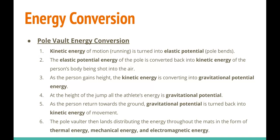At the maximum height of the jump, all of the energy has been converted into gravitational potential energy. As the person then starts falling back down toward the mat, all that gravitational potential energy is now turning back into kinetic energy. Once they hit the mat, the pole vaulter lands distributing energy throughout the mat in the form of thermal energy, mechanical energy, a little bit of kinetic energy, and electromagnetic energy as well.